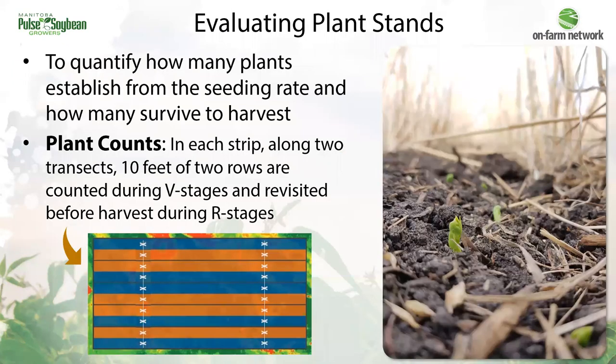In these trials, we're evaluating plant stands both early in the season for establishment and during maturity to see how those plant stands change throughout the season among the different seeding rates. We're counting 10 feet of two rows in each strip, doing this twice along two transects to get the average plant stand at those two different timings in the field.